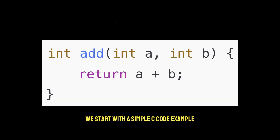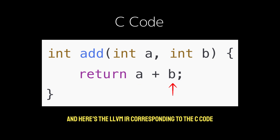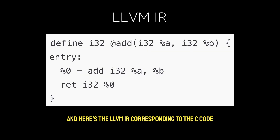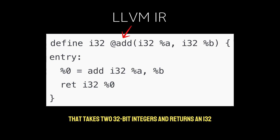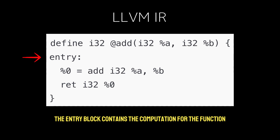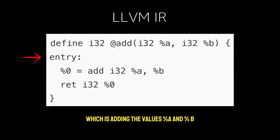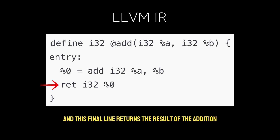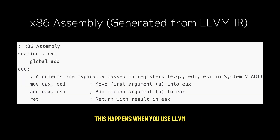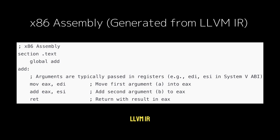Let's look at a worked example, starting with a simple C code that adds two integers A and B. Here is the LLVM IR corresponding to this C code: it declares a function `add` that takes two 32-bit integers and returns an i32. The entry block contains the computation — adding %A and %B and storing the result in %0 — and the final line returns the result. Next, the LLVM IR is compiled to x86 assembly using LLVM tools like LLC.